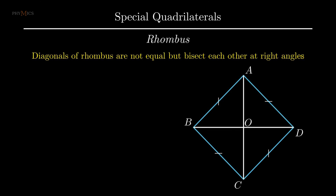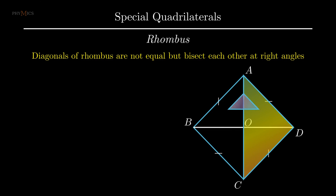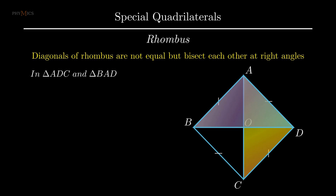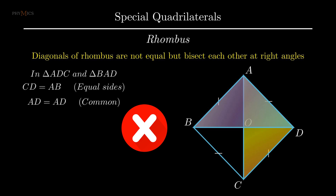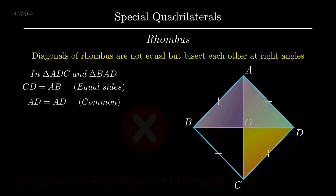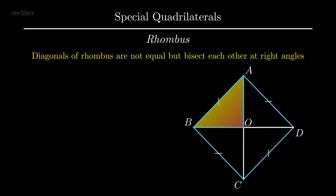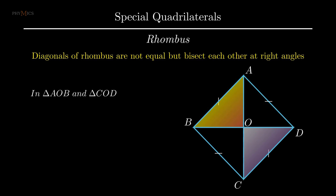To check the fact that diagonals of a rhombus are not equal, consider triangle ADC and triangle BAD, which include diagonal AC and diagonal BD respectively. As all sides of a rhombus are equal, side CD equals side AB, and AD is the common side to both triangles. From the figure, we are only able to prove two elements of the considered triangles equal, thus congruency conditions are not met and hence it can be concluded that the diagonals of a rhombus are not equal.